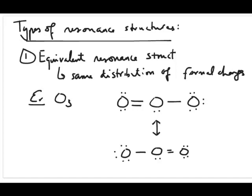In this video, we're going to talk about the types of resonance structures. There are two types that we would concern ourselves about, which we can differentiate using formal charges. The first type is called equivalent resonance structures. You can figure out that a resonance structure is equivalent to another by looking at their formal charges — they have the same distribution of formal charges across all the atoms.